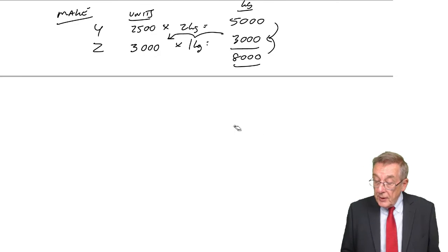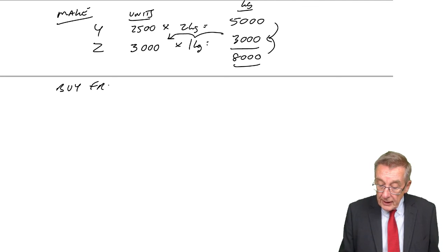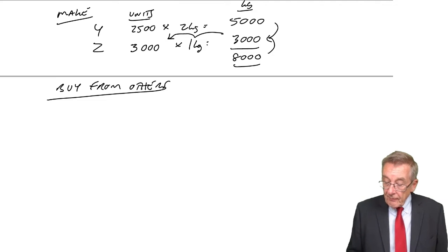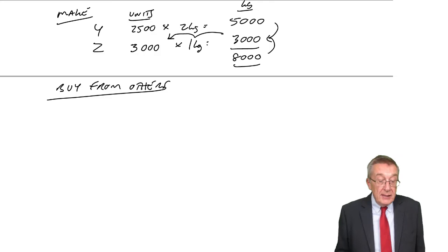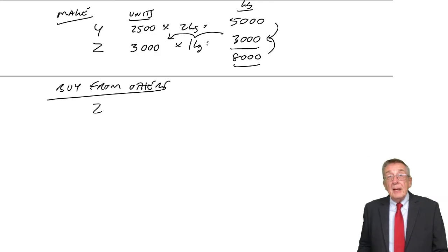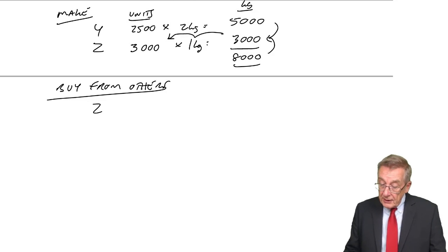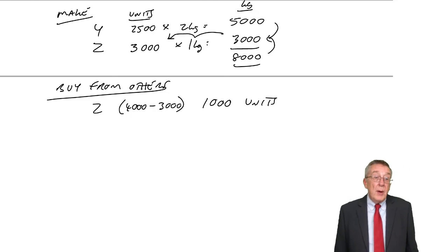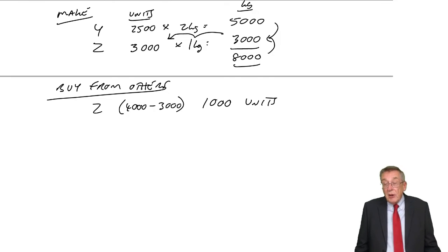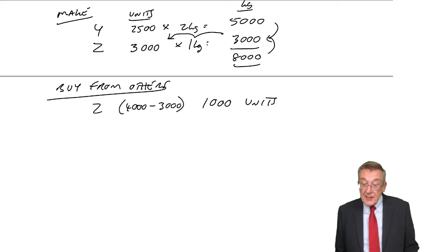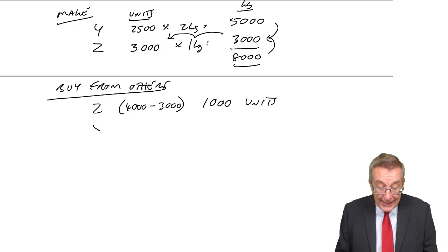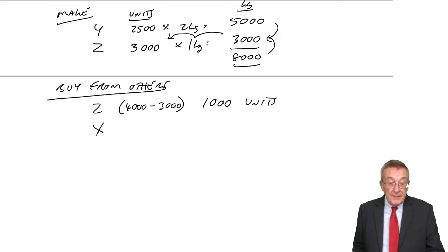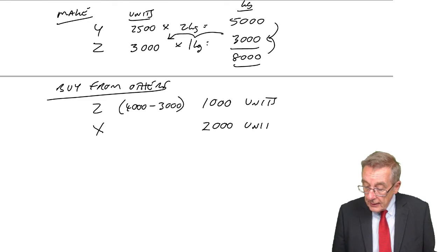And so, anything else we'd buy from others. And how many would we buy from others? Well, we won't buy any Ys. We've made enough. We've made everything we can sell. Z, well, remember, there's demand of 4,000. We're making 3,000 ourselves. So, the other 1,000, we'd buy from outside. I've already said, remember, we are assuming that the selling prices are high. So, we'd still make a profit. But we can't make it ourselves. We'd buy from outside. So, that's all the Zs we could sell. Finally, though, X. We wouldn't make any ourselves. We'd buy all 2,000 units from outside.